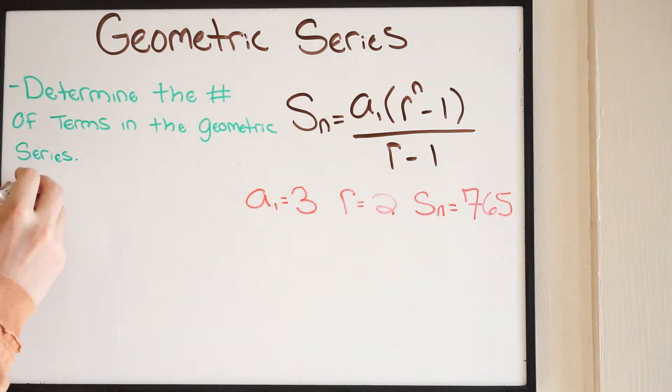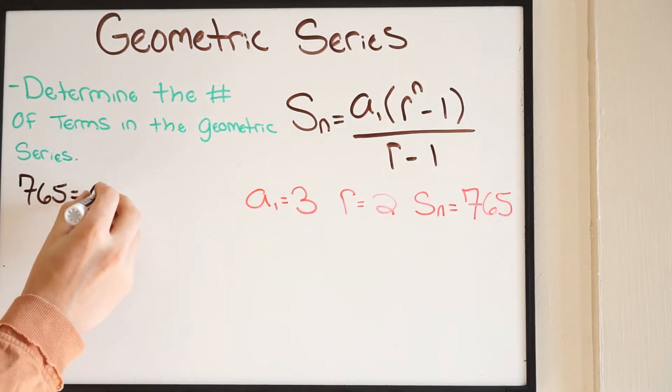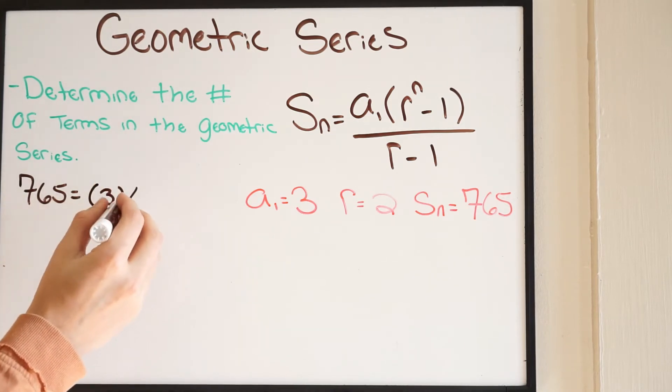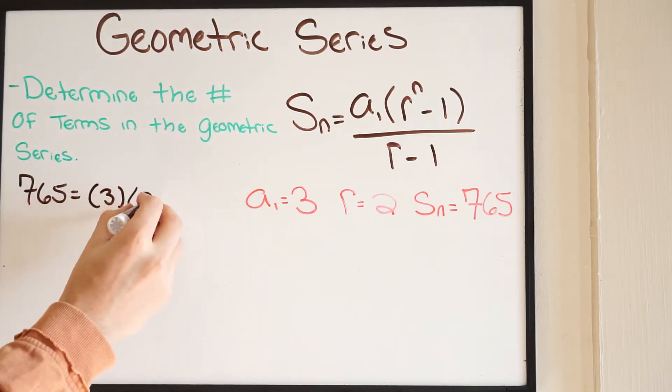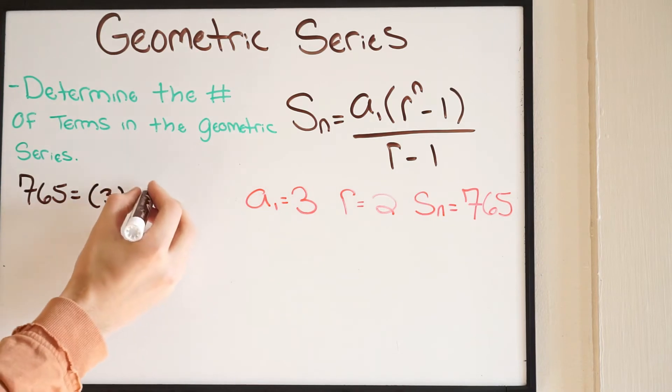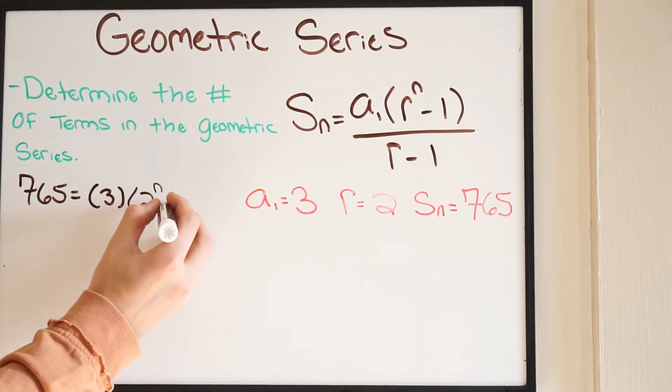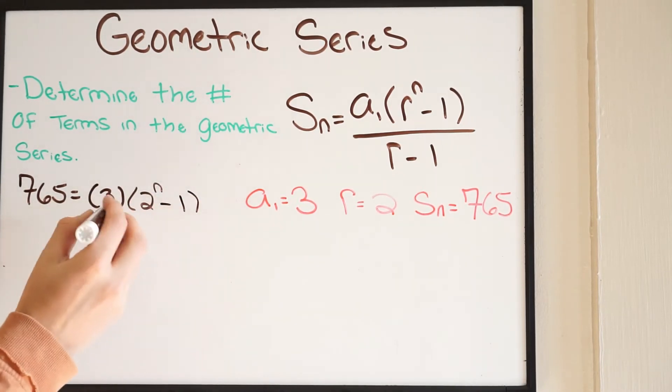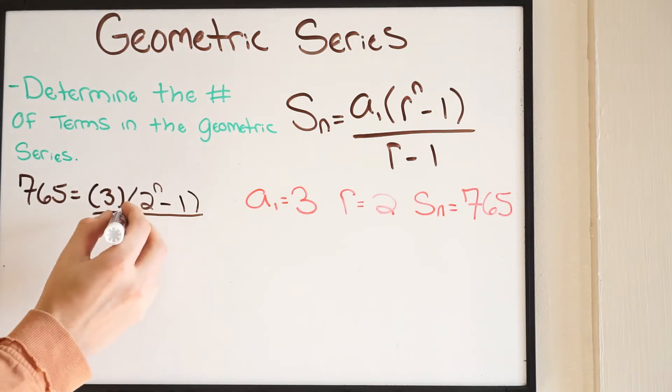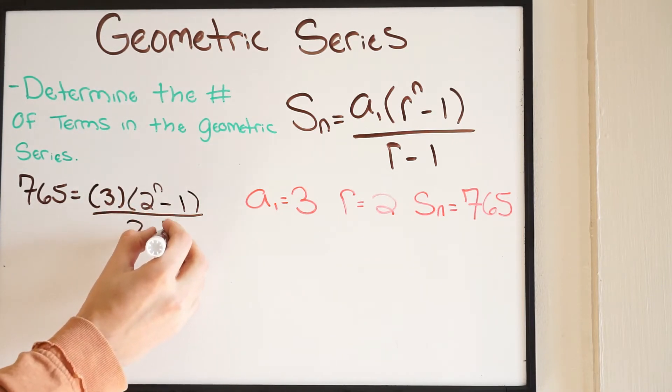We have 765 equal to, now our first term is going to be 3, so A of 1 is 3. Our common ratio is going to be 2, and then we just have N here, that's what we're solving for. This is going to be the number of terms. And then we're going to have minus 1, and then we're going to have 2 minus 1.